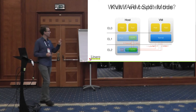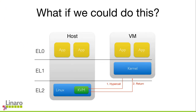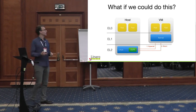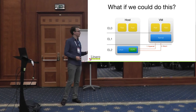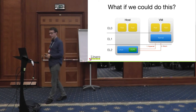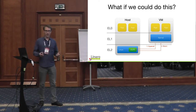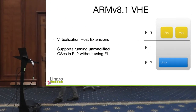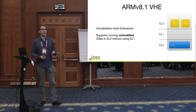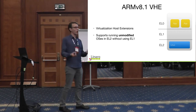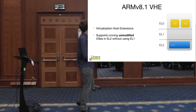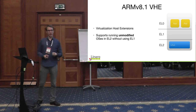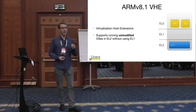What if we could run all of Linux with KVM in EL2? That would be great — when handling a trap from the VM we just handle it directly and return. That's where VHE comes in. VHE, short for the Virtualization Host Extensions, is a modification to the ARM architecture present in ARMv8.1. It allows us to run an unmodified operating system designed to run in EL1, in EL2.